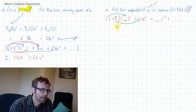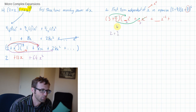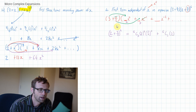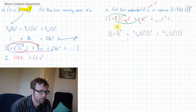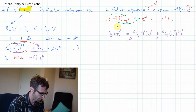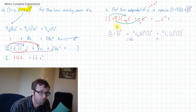So my first job is to work out those two terms. When we expand 2 plus 3 over x to the power of 6: 6 choose 0, 2 to the power of 6, 3 over x to the power of 1. 6 choose 0 is 1, so my first term is 2 to the power of 6, which is 64. My second term: 6 choose 1, which is 6, times 2 to the power of 5 times 3 — so this one should be 576 all over x. And now we're ready to go.